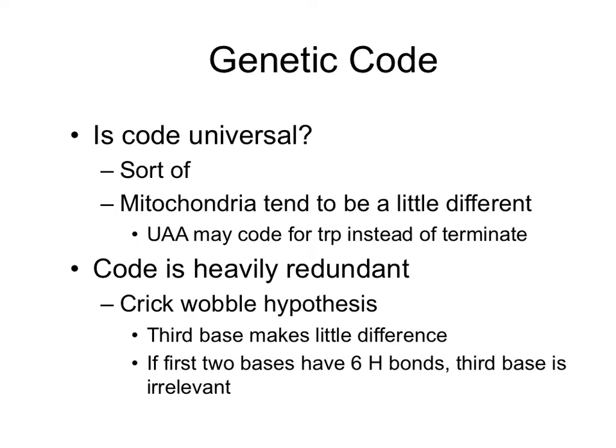Before we talk about mutagenesis strategies, let's look at the genetic code. Is the code universal? Sort of — mitochondria tend to be a little different, and UAA may code for tryptophan instead of termination. But in general it's pretty universal. The code is heavily redundant: there are 64 codons encoding 20 amino acids due to the Crick-Wobble hypothesis, where the third base makes little difference — the first two bases have six hydrogen bonds and the third base is largely irrelevant, leading to degeneracy of codons.